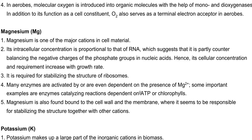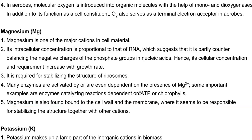Many enzymes are activated or require magnesium for their activity. Enzymes that catalyze reactions dependent on ATP and chlorophylls commonly require magnesium. Magnesium is also required for stability of the cell wall as well as the cell membrane, mainly playing a stabilizing role along with other cations available in the cells.